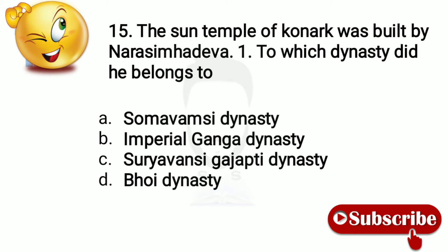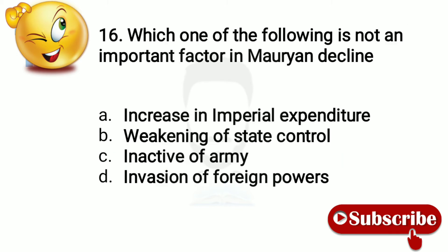Question 15: The Sun Temple of Konarak was built by Narasimha Deva I. To which dynasty did he belong? The answer is Suryavansi Ganga dynasty. Question 16: Which one of the following is not an important factor in Mauryan decline? Option number C, inactive army.